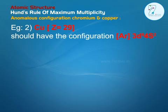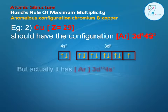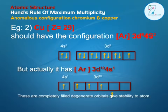Example 2 — Copper: Atomic number Z is equal to 29. It should have the configuration Argon 3d9, 4s2. But actually it has Argon 3d10, 4s1. This configuration gives completely filled d orbitals and a half-filled s orbital.